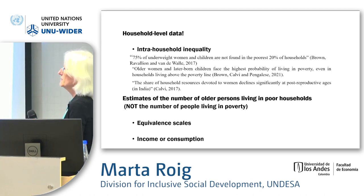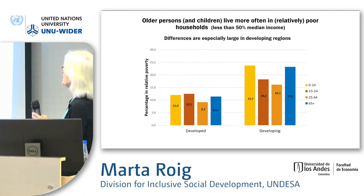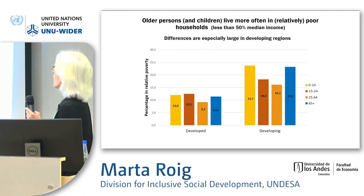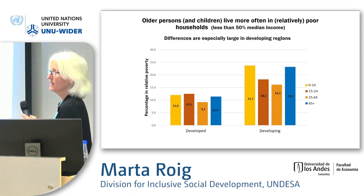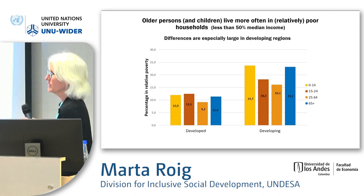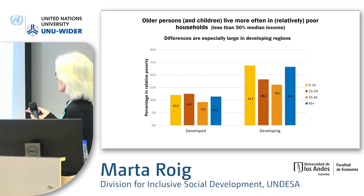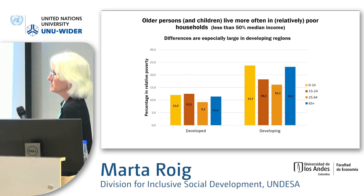Having said that, I'm showing you the estimates. Using a relative measure of poverty, the estimates show that older persons — defined as persons 65 or older — live more often in poverty than the working-age population, both in developed and developing countries, although the differences are larger in developing countries.